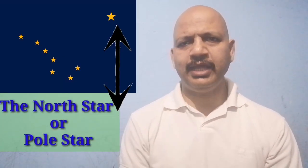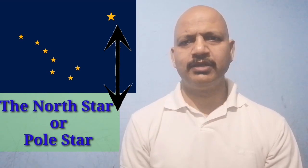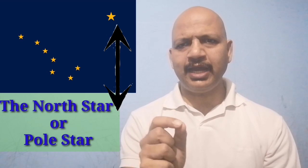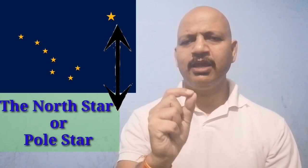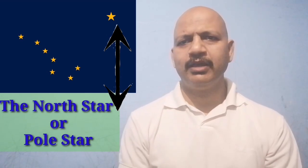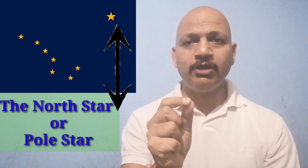In ancient times people used to find out directions with the help of stars. There is a star named the North Star and this star always indicates the north direction. It does not change its position. This star is also known as the Pole Star or Dhruv Tara. We can locate the Pole Star with the help of Sapt Rishi, as you can see in the image.